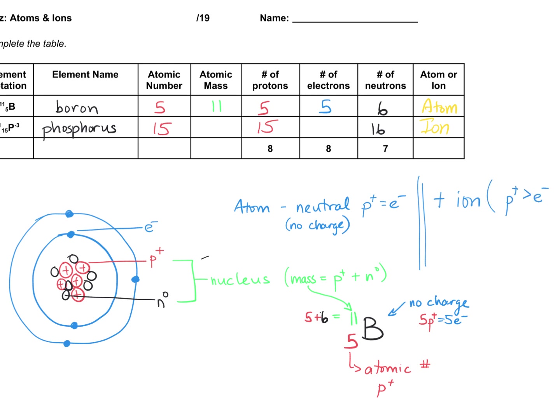So a positive ion means you have more positive particles, more protons. Okay, if you have a negative ion, then it means that there's more negative particles. So the electrons are greater than the protons. So this is more electrons.